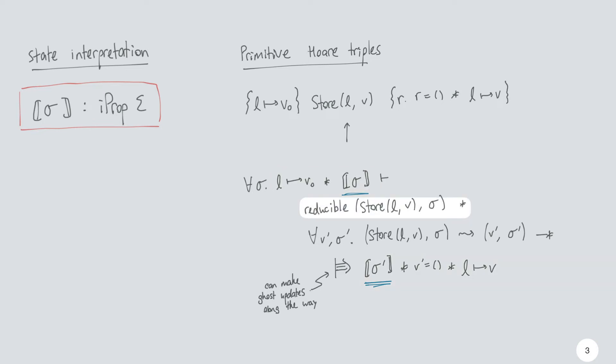Now I'll go over what's inside this definition in between. The first thing that we have to prove when proving this Hoare triple is that store is reducible in any state where the state interpretation holds and we have the preconditioned resources. We can do that because this L maps to V0 is going to guarantee that L is actually mapped in the heap and therefore we're able to execute the store. So this takes care of proving that store is not stuck if this precondition holds.